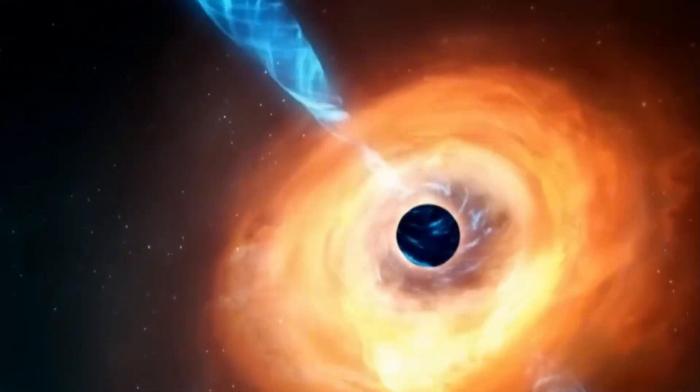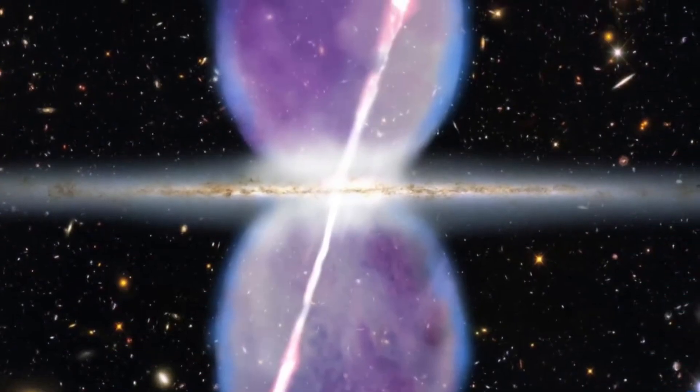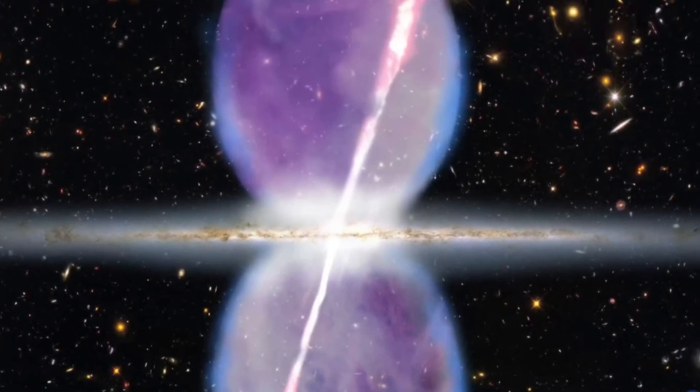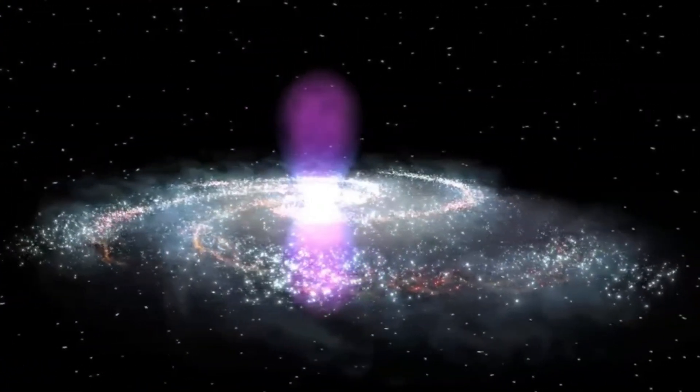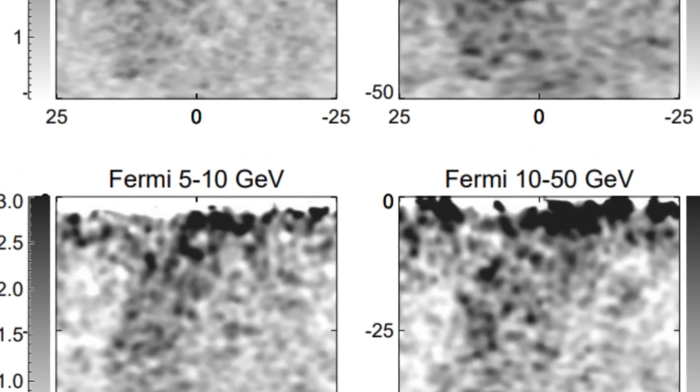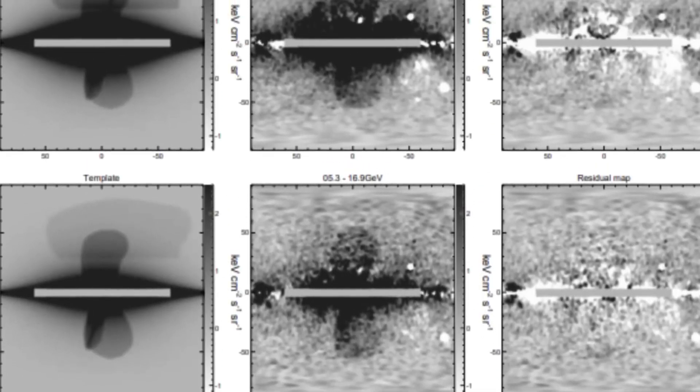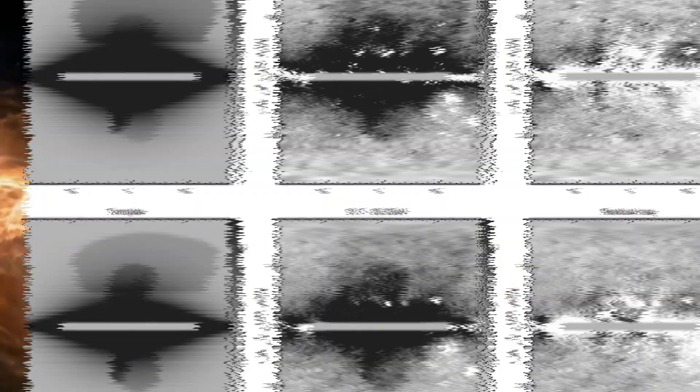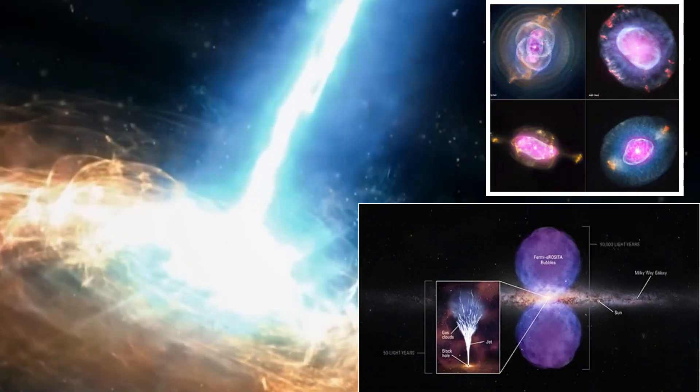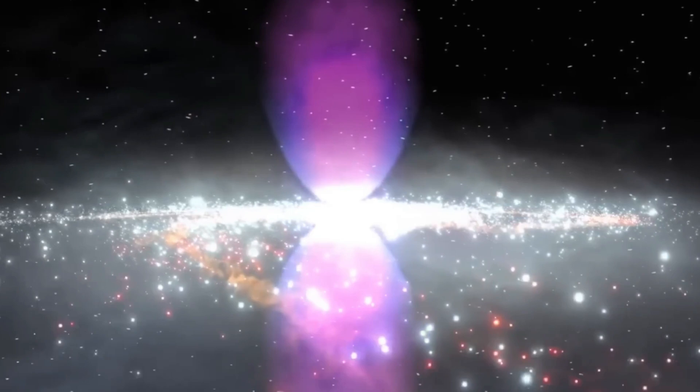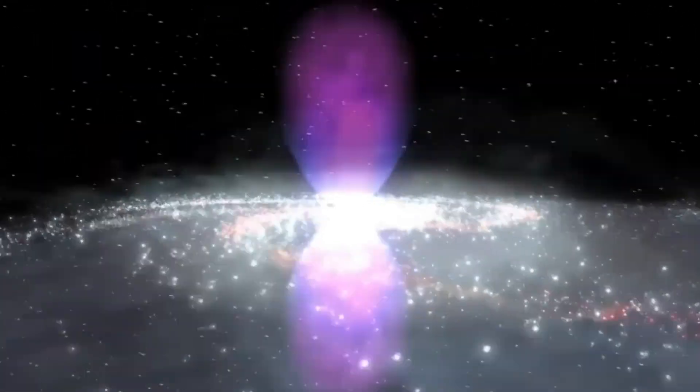In essence, the Fermi and Erosita bubbles are not just cosmic oddities. They represent moments in the Milky Way's history that have had profound, lasting impacts on its structure, star formation, and even the way matter is distributed across the galaxy. As we continue to explore these enigmatic bubbles, we may find that they are key to understanding not just our galaxy's past, but its future as well.